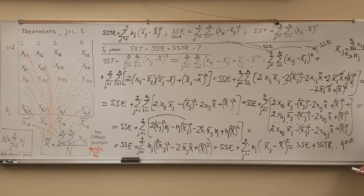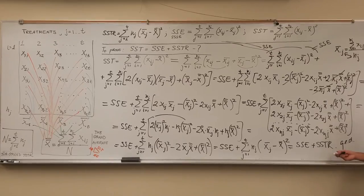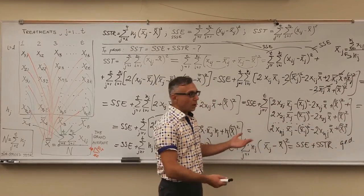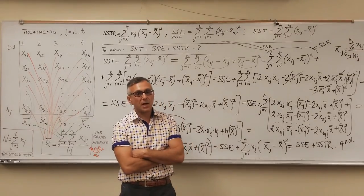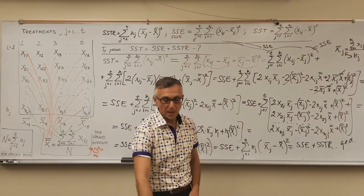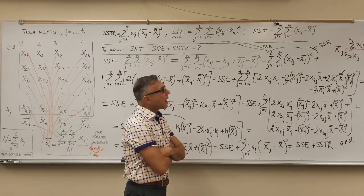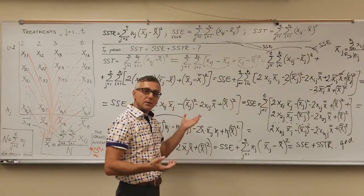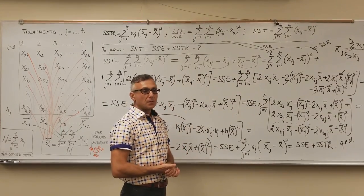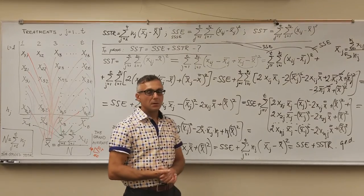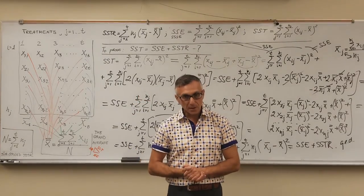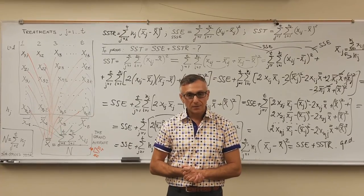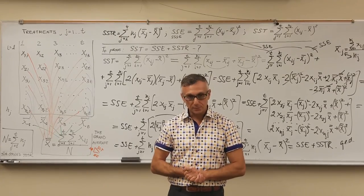This is exactly the SSTR component. We've shown that SST splits into exactly those two components. Starting from SST and applying elementary algebraic operations step by step, we've proven that SST equals SSE plus SSTR. This is the end of the proof — shown algebraically, in general, using formulas, logically. I hope that was clear, informative, and useful. Thank you very much, talk to you soon, bye bye.